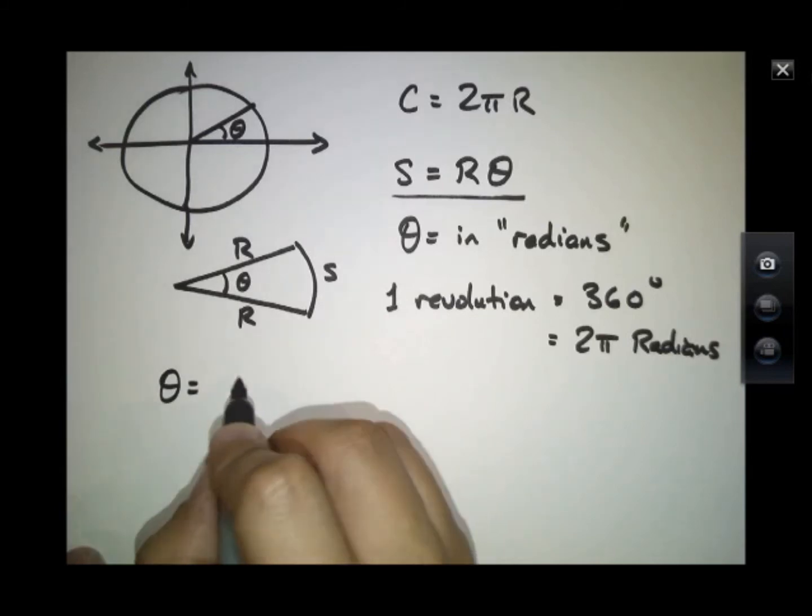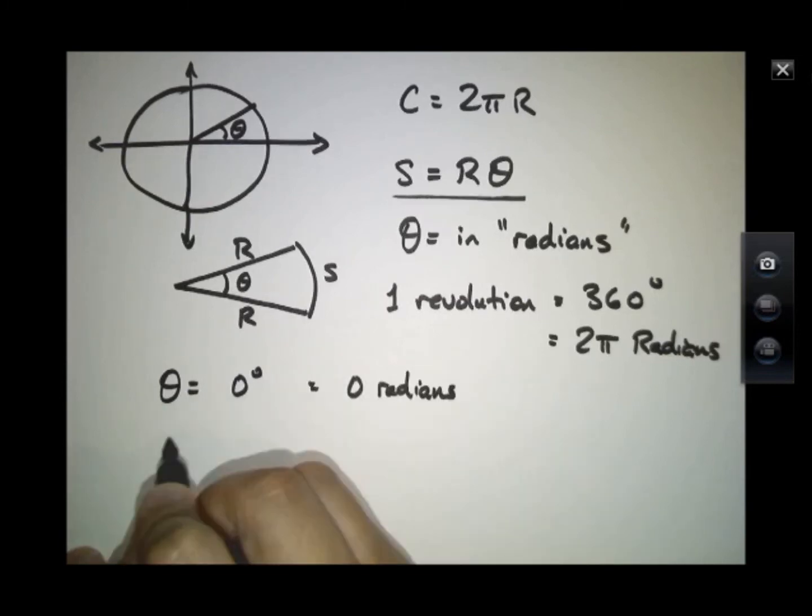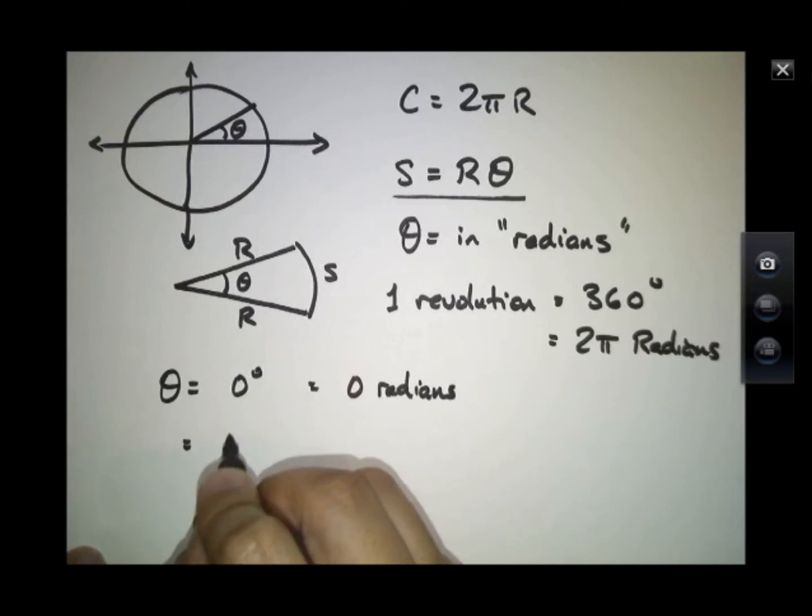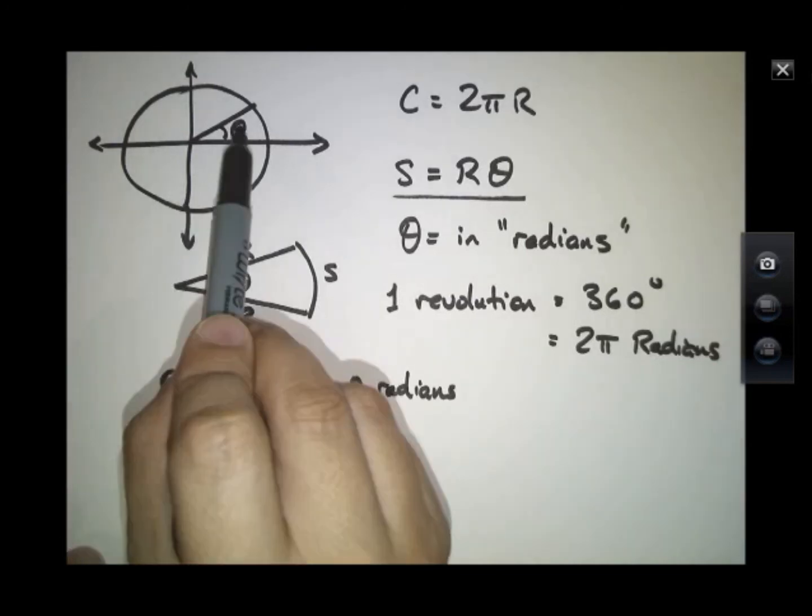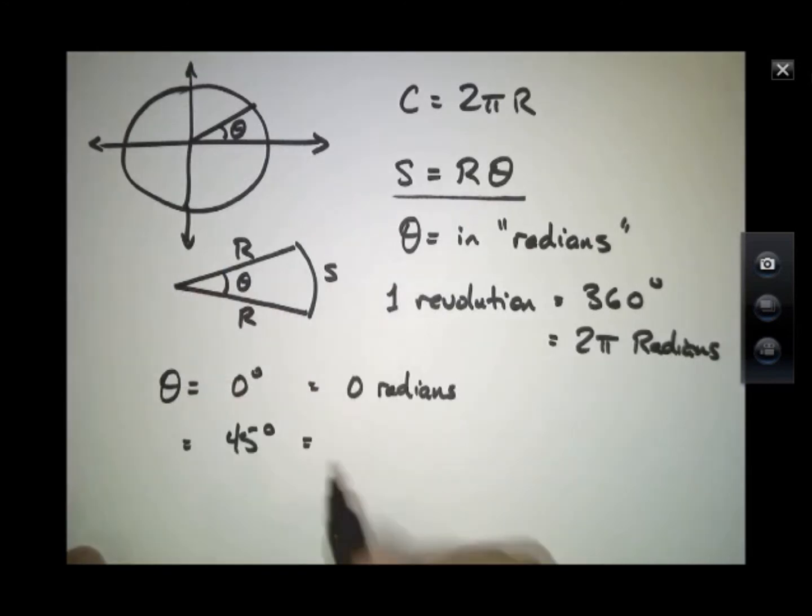So, 0 degrees is 0 radians, but 45 degrees would equal what? 45 degrees is about 1 eighth of one revolution, and that's pi over 4. 90 degrees would be pi over 2. 180 degrees would be pi.